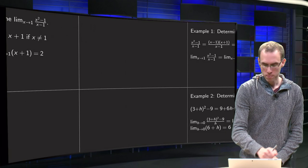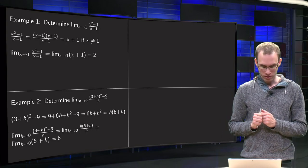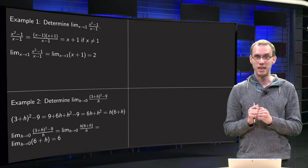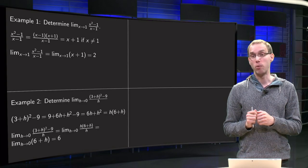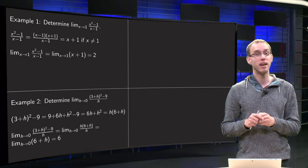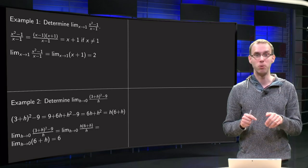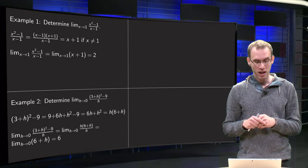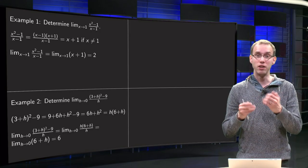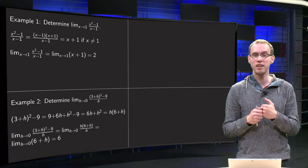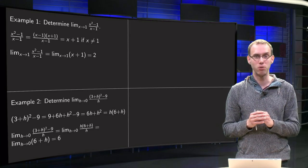Next example. Then we have to limit h to 0, 3 plus h squared minus 9 over h. Well, what happens if we try to plug in h directly? Well, you see 0 in the denominator, so there is something going wrong there, and we have 3 squared minus 9, 9 minus 9 equals 0 in the numerator, so 0 over 0. So, plugging in 0 directly is not going to work, we cannot do something like quotient rule.